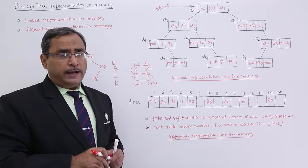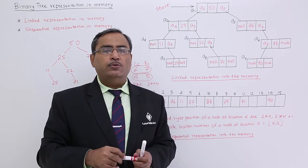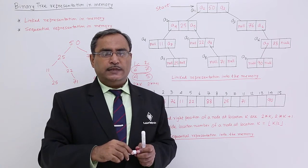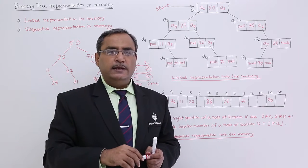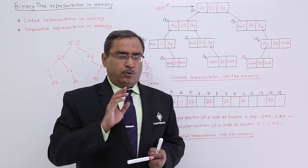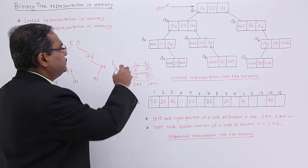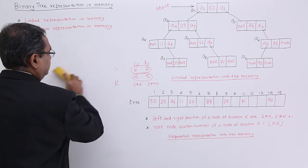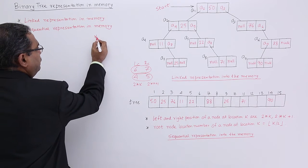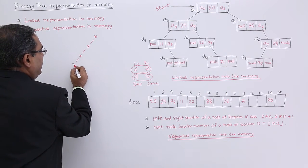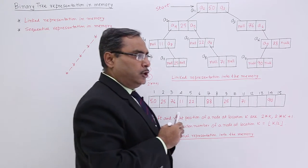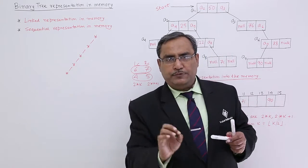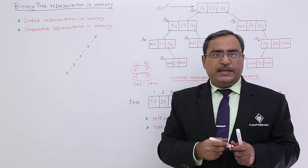The question coming to mind is: which representation is better and where should you use linked representation versus sequential representation? Suppose there is a particular tree which is having only the left child at every node — this is known as a left skewed tree.